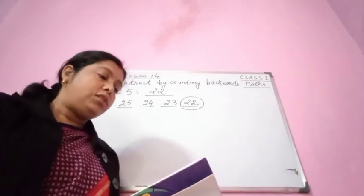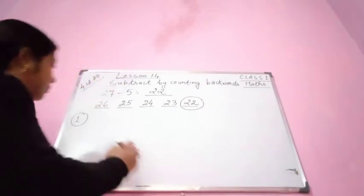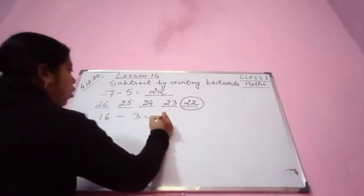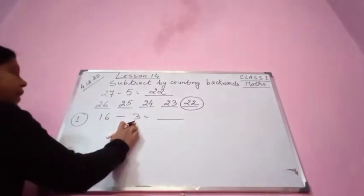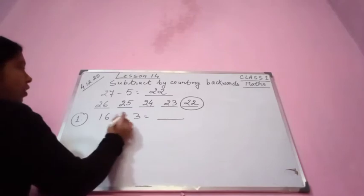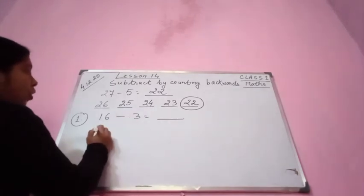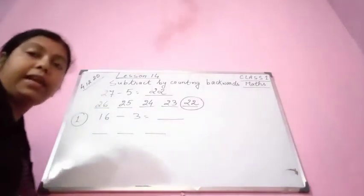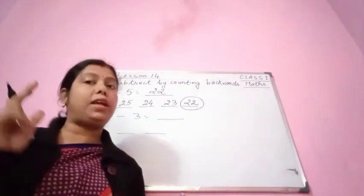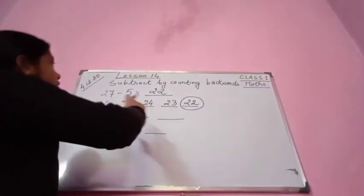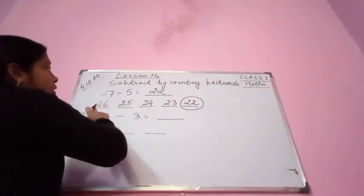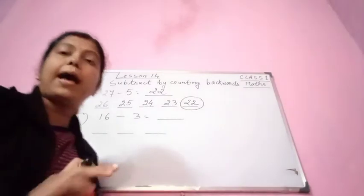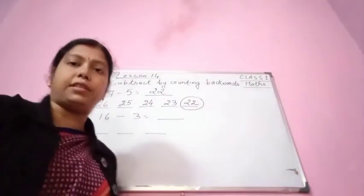So, 16 minus 3. 16 minus 3 equals how much? We have to subtract 3 from 16. So we have to go backwards — 3 places. Before 16, we have to go 3 places. Remember that. Just like before 27 we went back 5 places.